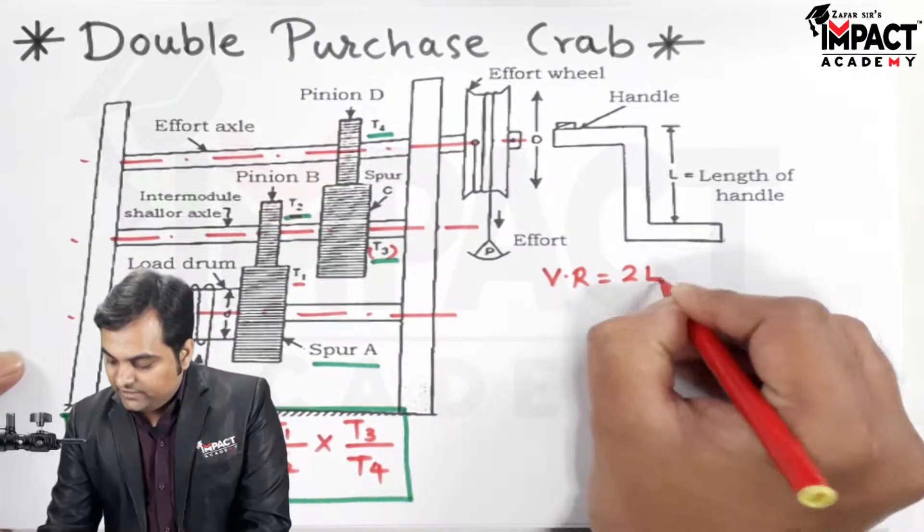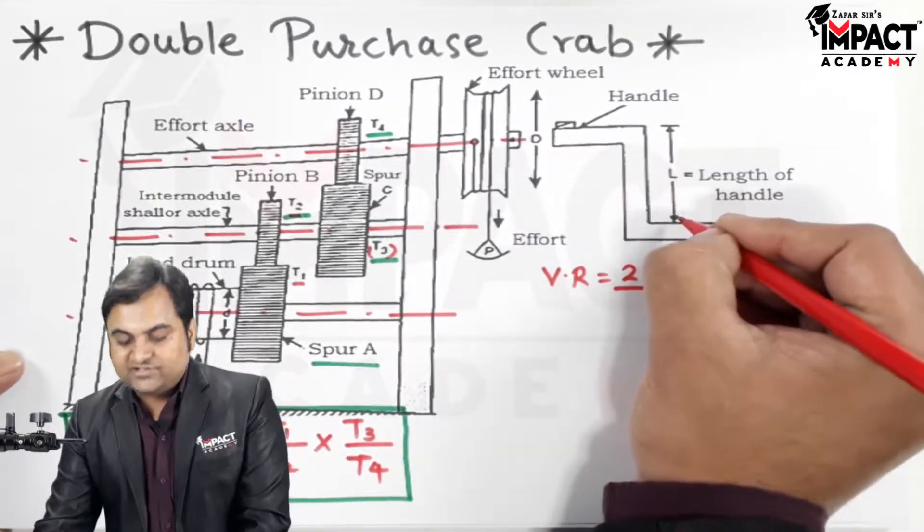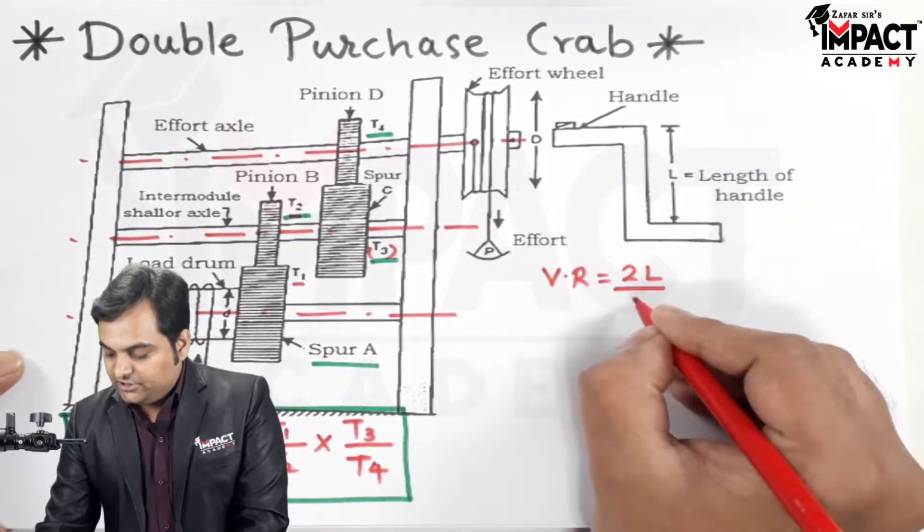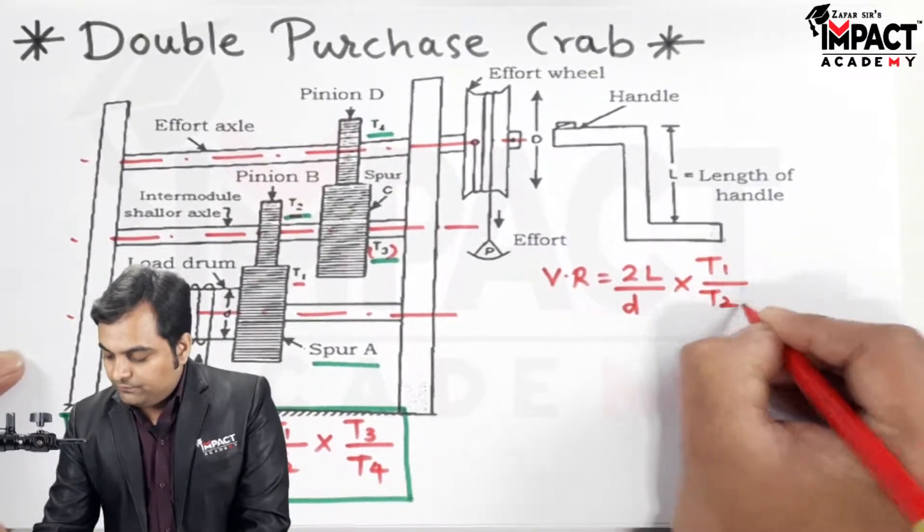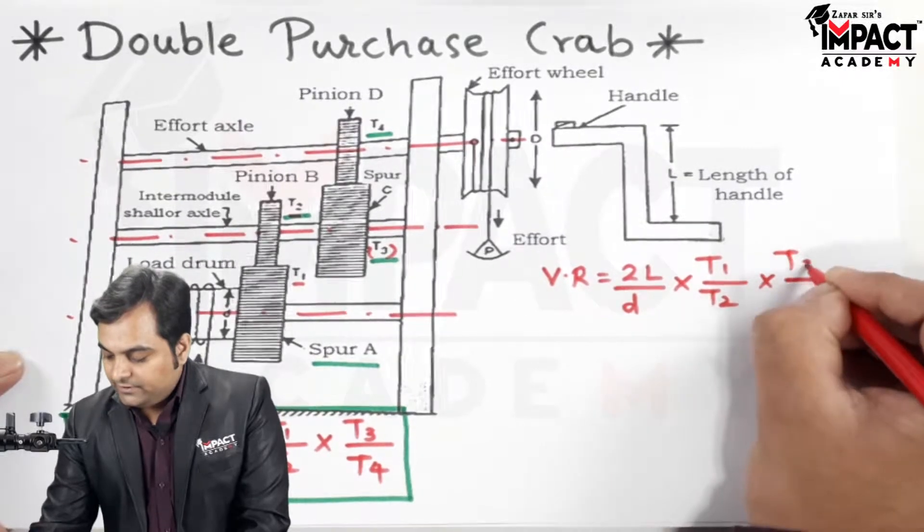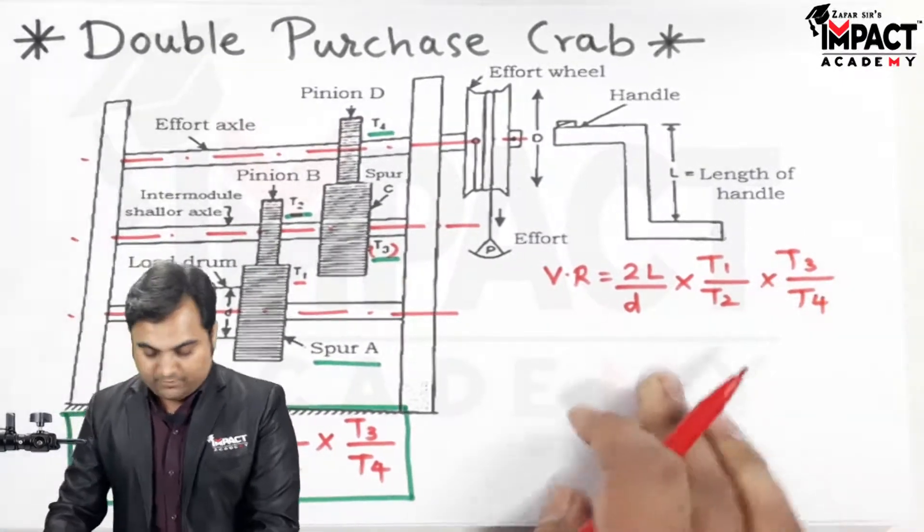Twice of L, because crank acts as a radius so the diameter is 2L, upon small d, into t1 by t2, into t3 by t4. So this much part is common.